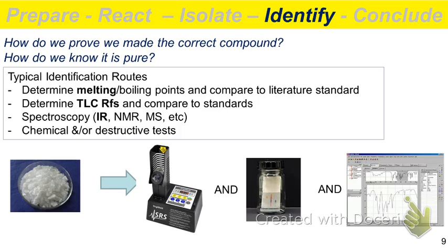Other spectroscopy options include NMR, which we'll learn at the very end of the semester in lab, and mass spec, which you'll see in lecture. We could also do a chemical test, but it's one we typically don't use in organic synthesis — why? We want the product, and the result of a chemical test is destruction of the product. While it gives some information, we end up destroying our product, so it just doesn't make sense.